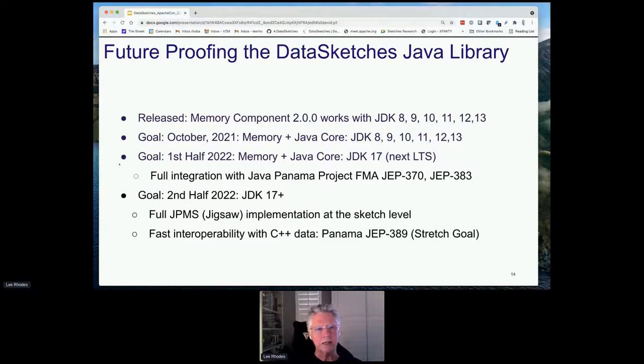We'll be right there in step with it. One of the interesting things we're planning is having full JPMS or jigsaw implementation at the sketch level. This will allow you to select and download basically only the sketches you're interested in out of the full library into your environment. This is certainly of advantage to IoT systems where storage space is very limited. A stretch goal for the end of next year will be interoperability with C++. New JEP 389 is advancements to Java and allow very tight integration with C++. This will allow us to have both our C++ and Java implementations to work very closely together, which is very exciting.